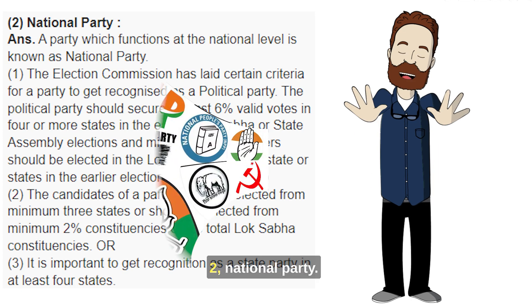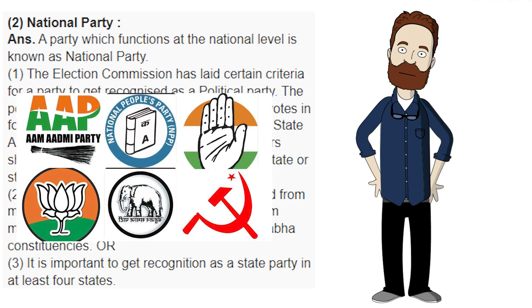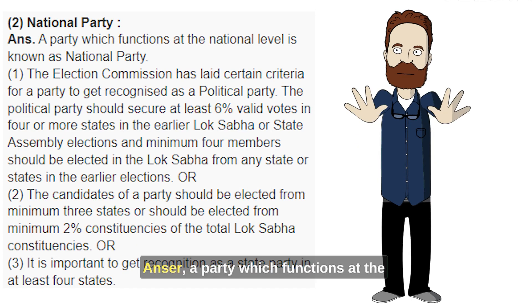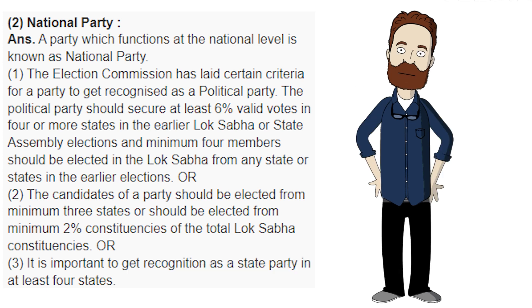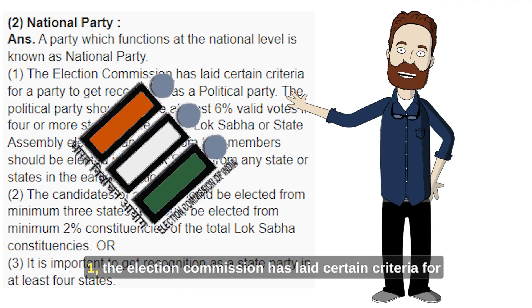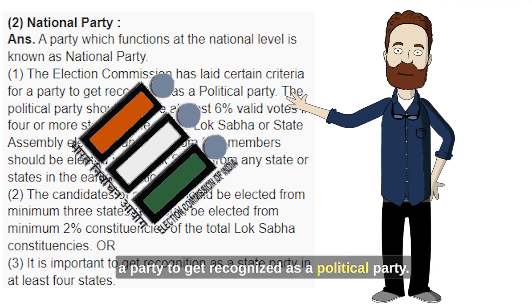2. National Party. Answer: A party which functions at the national level is known as a National Party. The Election Commission has laid certain criteria for a party to get recognized as a political party.